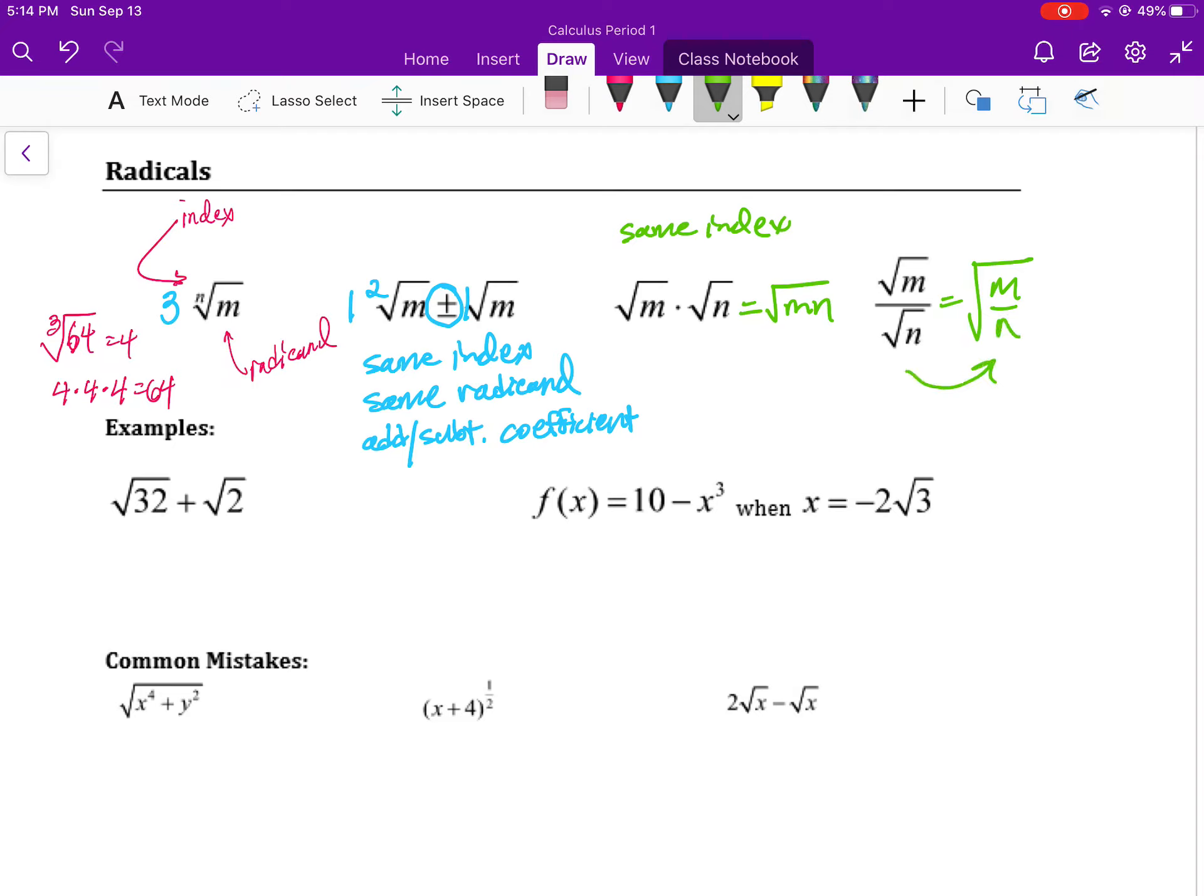It's important to keep in mind that these can move back and forth between them, so identifying when you might want to write it as a single square root versus when you might want to write it as the division of two square roots could be important for problem solving.